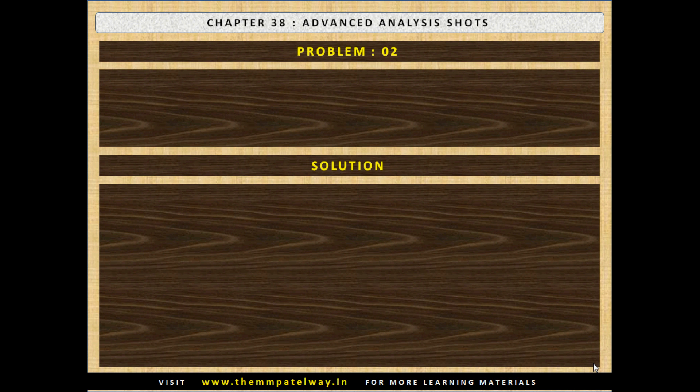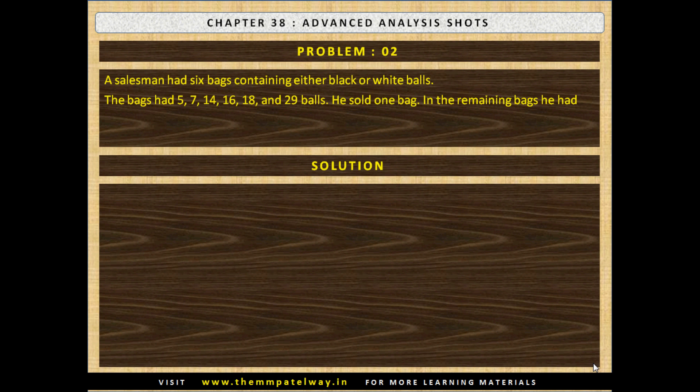Problem number 2. A salesman had 6 bags containing either black or white balls. The bags had 5, 7, 14, 16, 18 and 29 balls. He sold one bag. In the remaining bags he had equal number of black and white balls. Which bag did he sell?